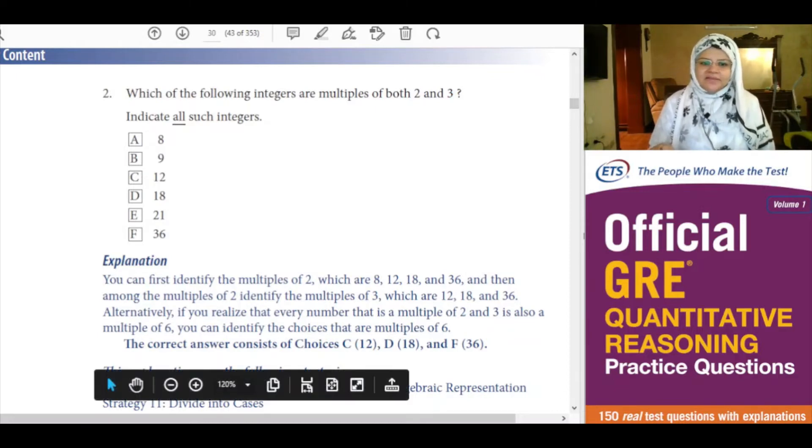Alternatively, if you realize that every number that is a multiple of 2 and 3 is also a multiple of 6, you can identify the choices that are multiples of 6.